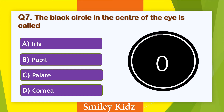Your time is up. The right answer is pupil. The black circle in the center of the eye is called pupil.